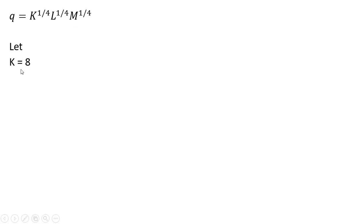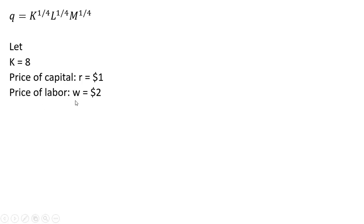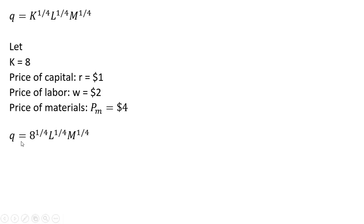We're going to let capital equal 8. The price of capital, R, is $1. The price of labor, W, is $2. The price of materials, or raw materials, is $4. The first thing I'll do is plug in 8 for K. So here is our short-run production function, and it has two variable inputs: labor and raw materials.